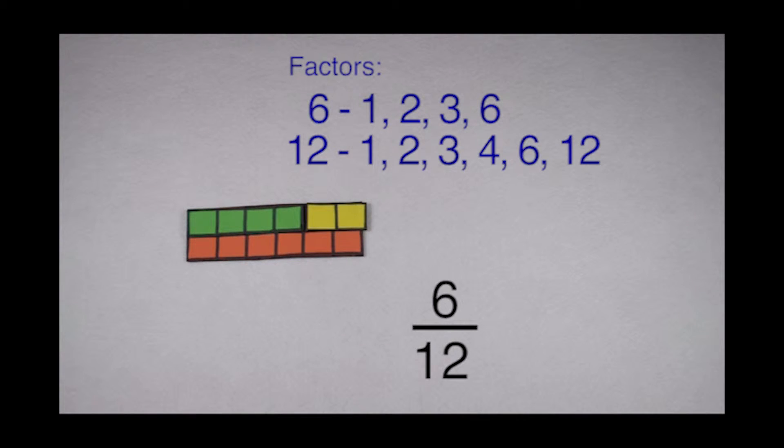Factors of 12 would include 1, 2, 3, 4, 6, and 12. We want to use the greatest common factor because that will take our answer to lowest terms in the fewest steps.